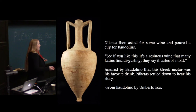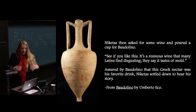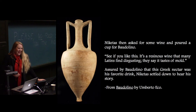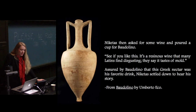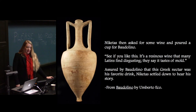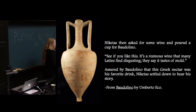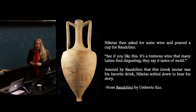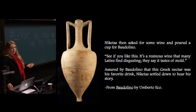As I was writing this, I read Umberto Eco, who writes: 'Nicquetas asked for some wine and poured a cup for Baudolino. It's a resinous wine that many Latins find disgusting — they say it tastes of mold. Assured by Baudolino that this Greek nectar was his favorite drink, Nicquetas settled down to hear his story.' In this snippet we see an interesting idea: Latins versus Greeks — people from Italy versus people from Greece — creating different kinds of wine. How does preference drive the way that we decide to purchase things?